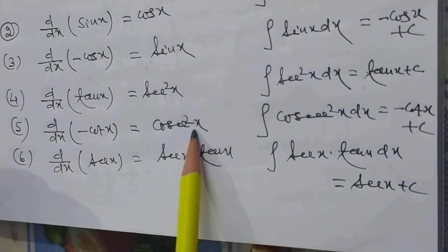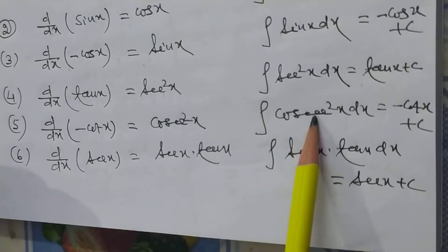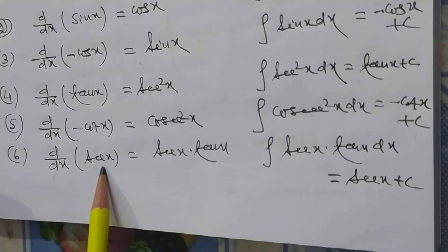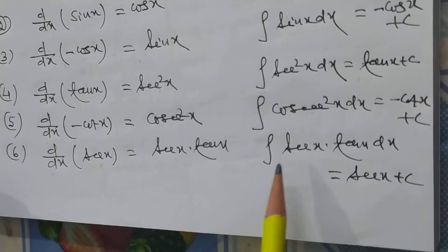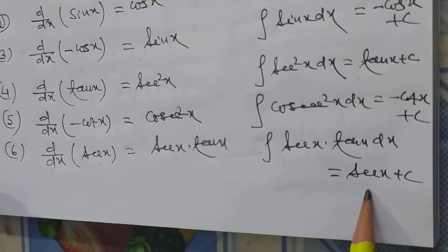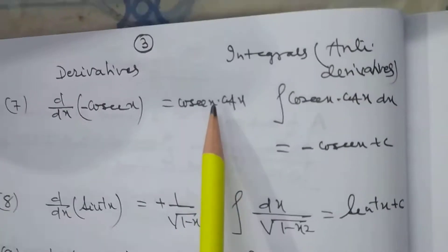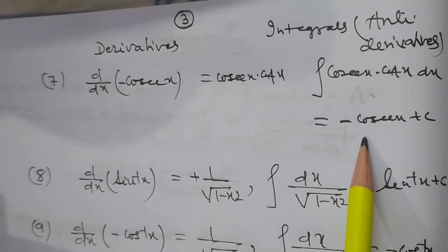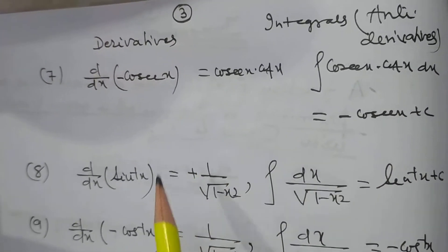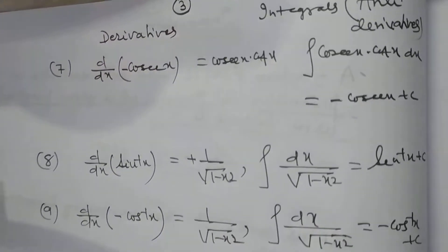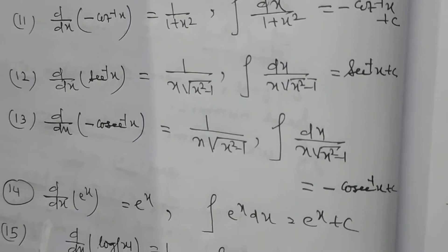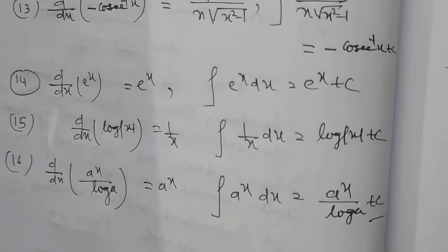d/dx of (−cot x) is cosec²x, so integration of cosec²x dx is −cot x + c. d/dx of sec x equals sec x·tan x, so integration of sec x·tan x dx equals sec x + c. d/dx of (−cosec x) equals cosec x·cot x, so integration of cosec x·cot x dx is −cosec x + c. We have listed 16 standard functions with their differentiations and corresponding integrations.